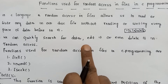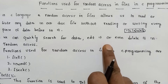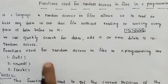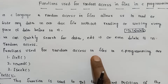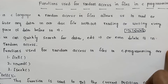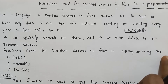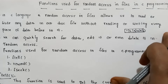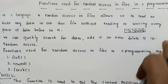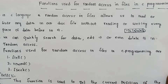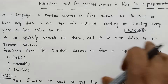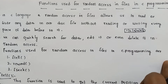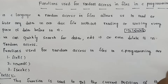We can quickly search for data, edit it, or delete it using random access. Random access is used for quick processing of data, making it faster to access specific file content.